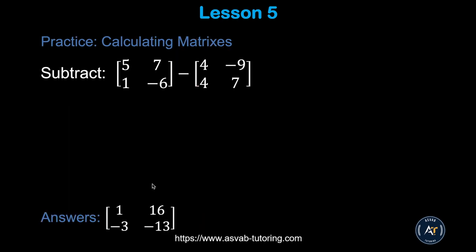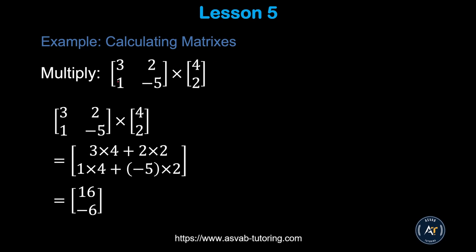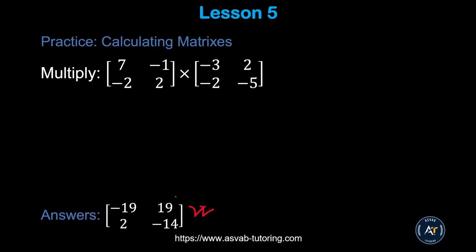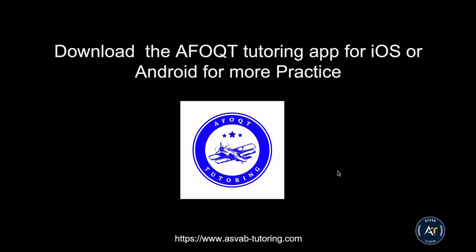For matrix multiplication, multiply rows by columns: 3 times 4, 2 times 2, 1 times 4, 5 times 2, following the standard pattern. There is another practice problem — try it yourself. That covers this lesson. Download the app from the App Store or Google Play, practice lesson five, do the homework, and take the practice test. Aim for 80 percent or higher to confirm you've learned all the material.